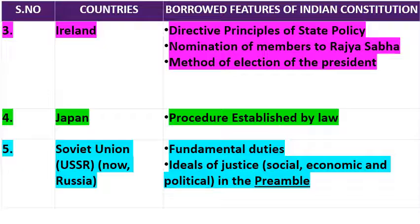Next है Soviet Union, जिसे अब Russia — रूस — कहते हैं। वहाँ के constitution से क्या borrow किया गया है? Fundamental Duties — जो कि आपके constitution के Part 4-A में दी गई हैं। Next है Ideal of Justice — जो आपकी Preamble है, उसमें Justice — Social, Economic, and Political — जो words add किए गए हैं, वो Soviet Union के constitution से borrow किए गए हैं।